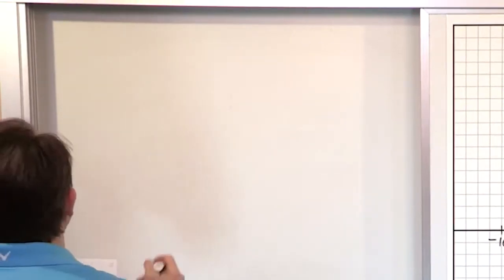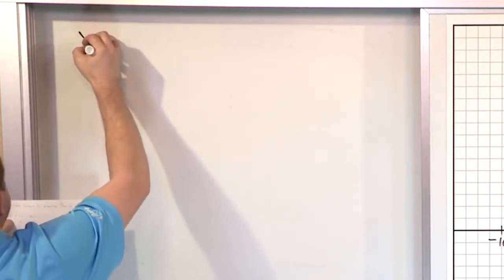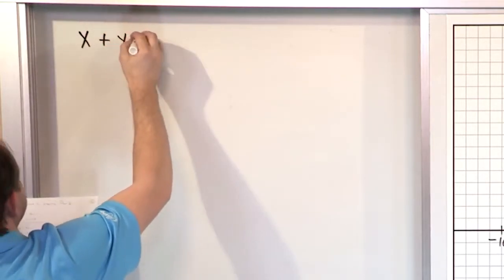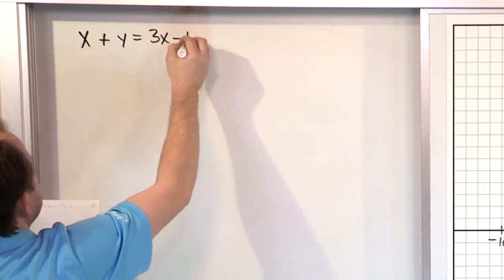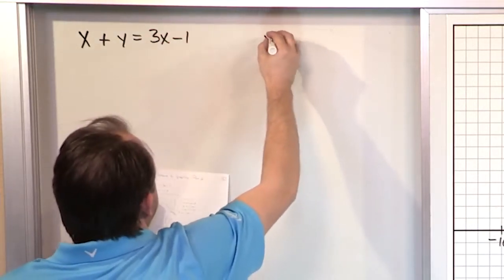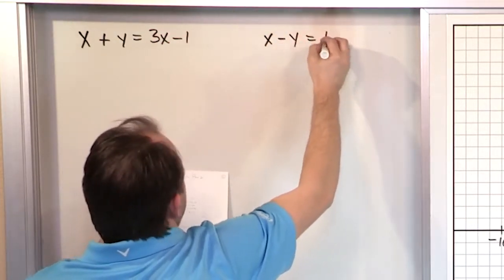So let's just take a look at the first set of equations for the system. x plus y equals 3x minus 1. And the other part of the system is x minus y is equal to 1 minus x.